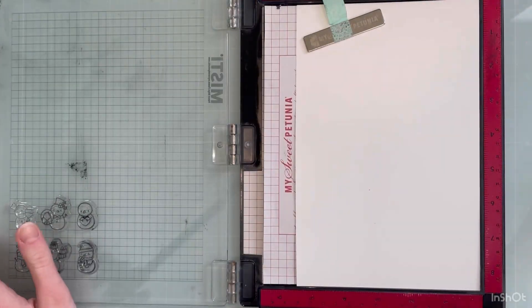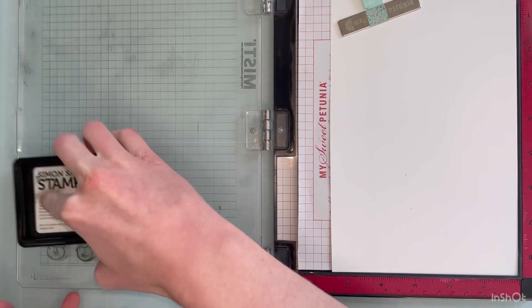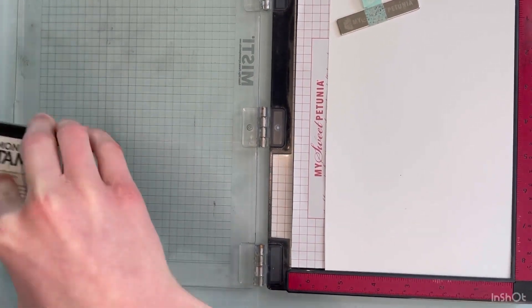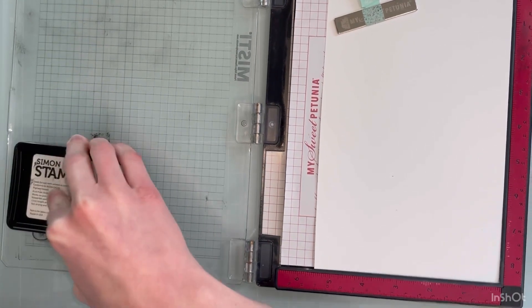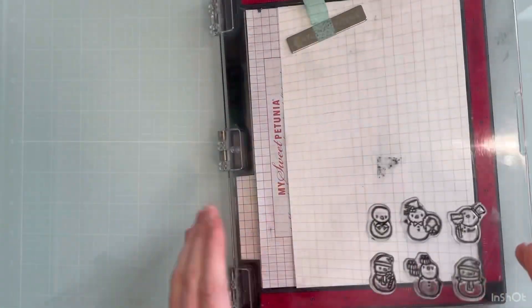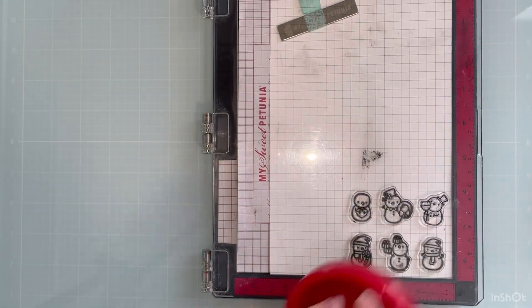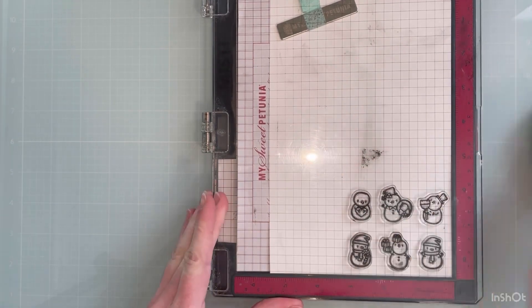So I'm going to start by stamping these snowman. I believe they are from the Mama Elephant stamp set. I think they're called Little Snowman Agenda. They have a bunch of stamps like these. Any of them would work. I have the Snowman's, but there's Santa.